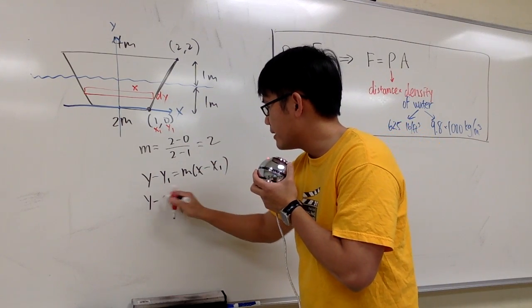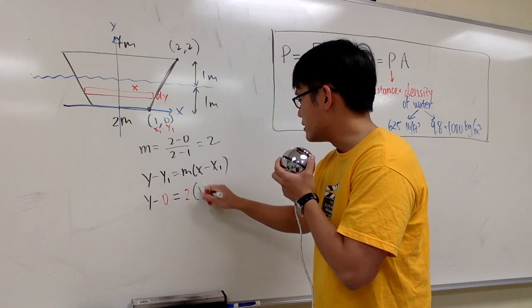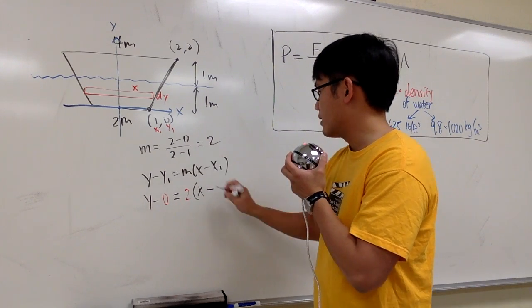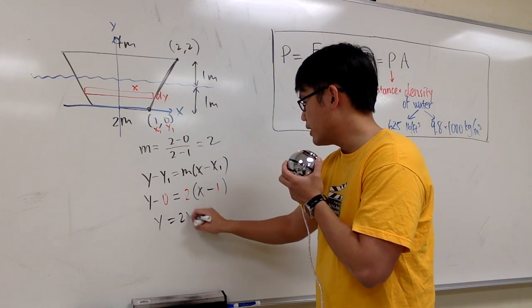And then, let's see, y minus 0 equals to m, which is 2, and then x is just x, x1 is 1. y will be distributed 2, we get 2x minus 2.